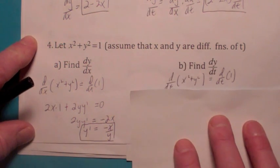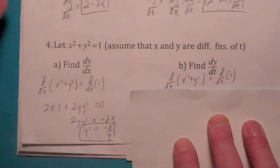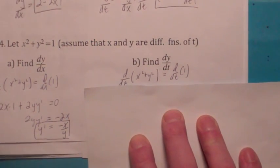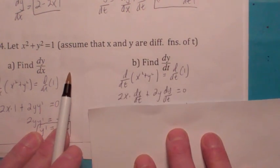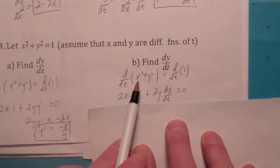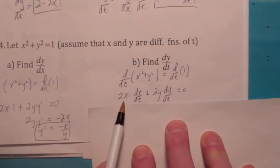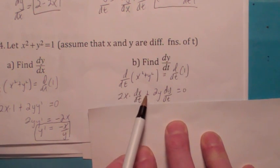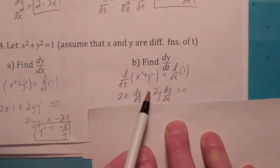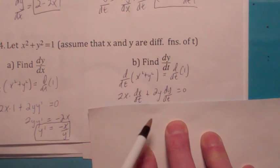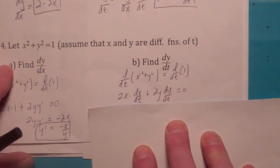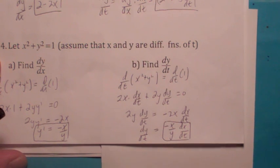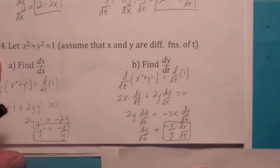On the second one, however, when you differentiate both sides with respect to t, what's the derivative of x² with respect to t? You get 2x times dx/dt. Same is true with the y², you get 2y times dy/dt equals 0. So when you solve for dy/dt on this last one, you get negative x over y times dx/dt.